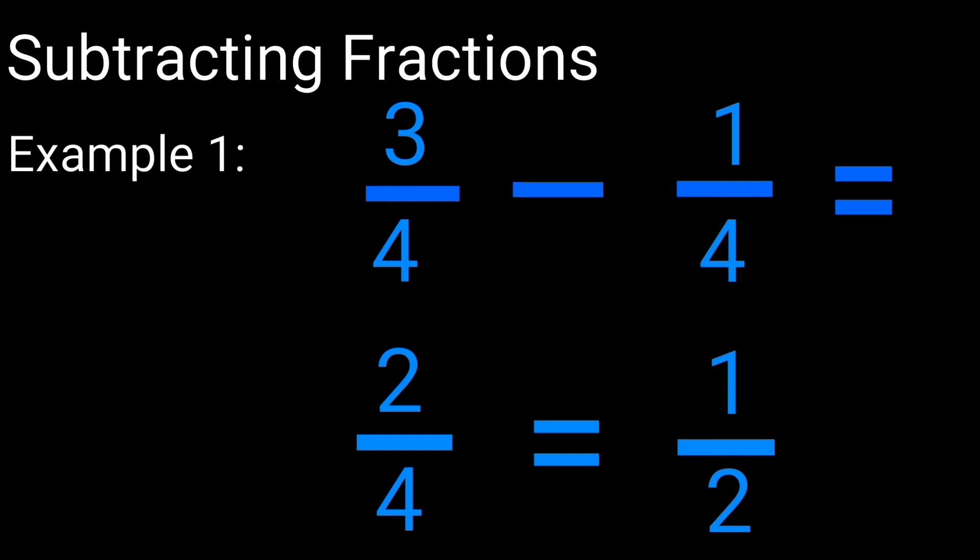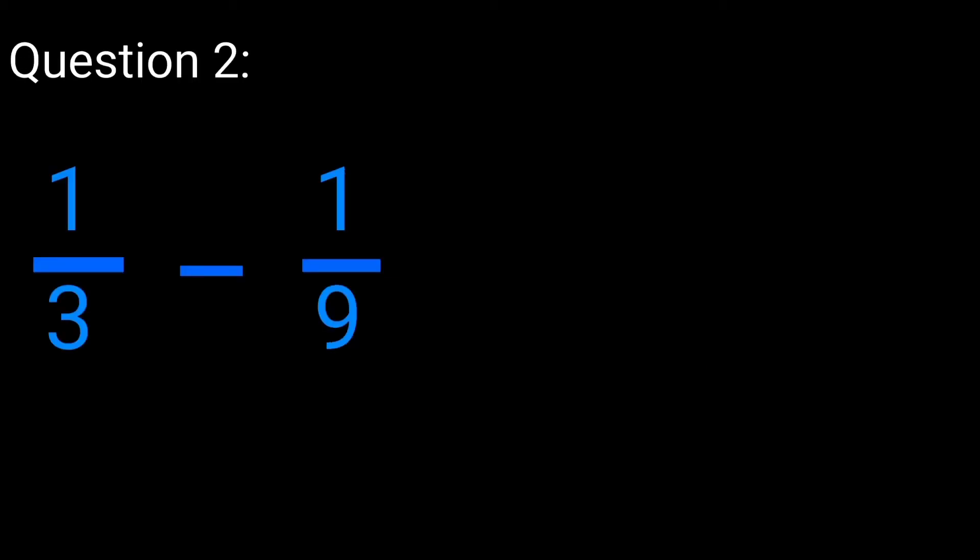Now we're going to move over to a more tricky question. Question number 2 says 1 over 3 minus 1 over 9. Here the denominators are different numbers, so we're going to be following a simple step to get the correct answer, and that step will be: top left multiplied by down right. The top left here is 1 and down right here is 9, so it's going to be 1 times 9. 1 times 9 is going to give you 9.